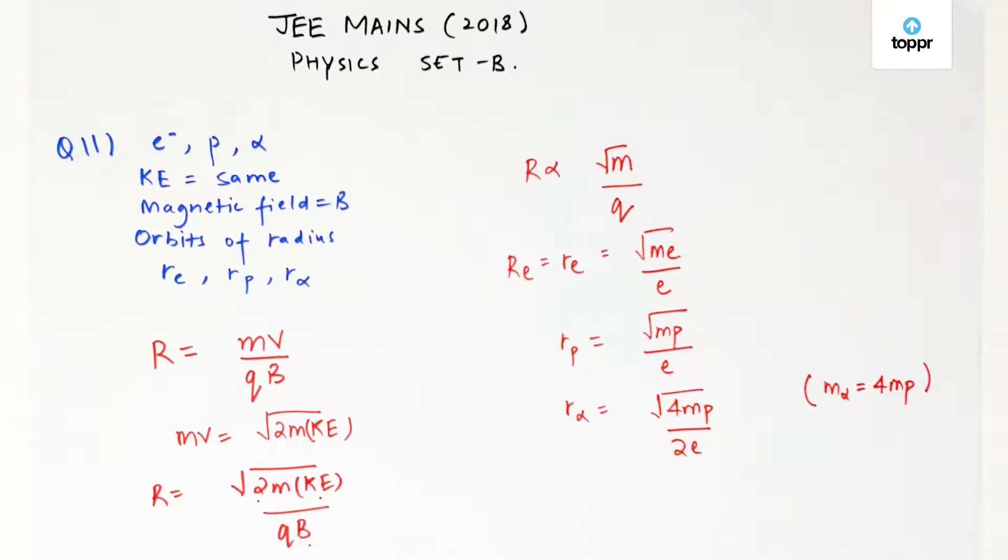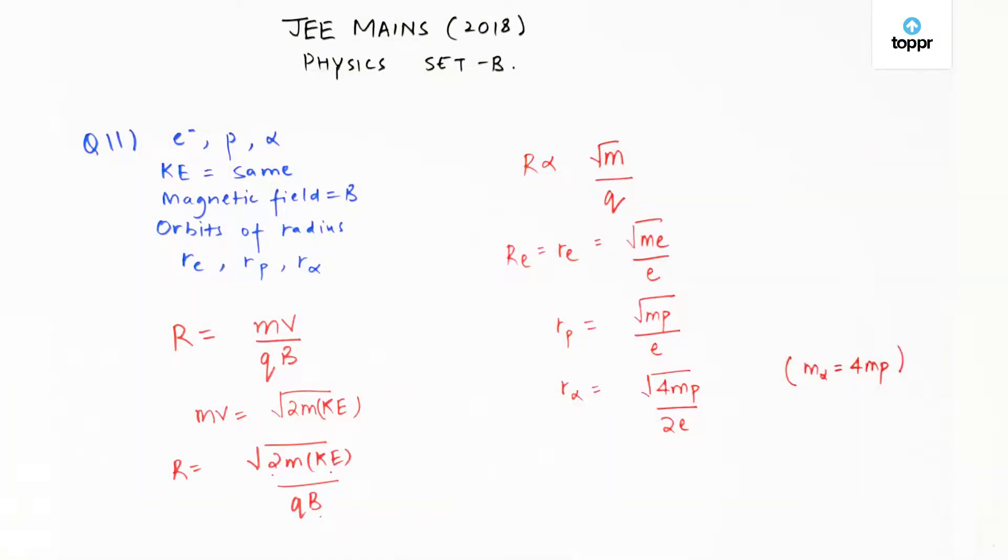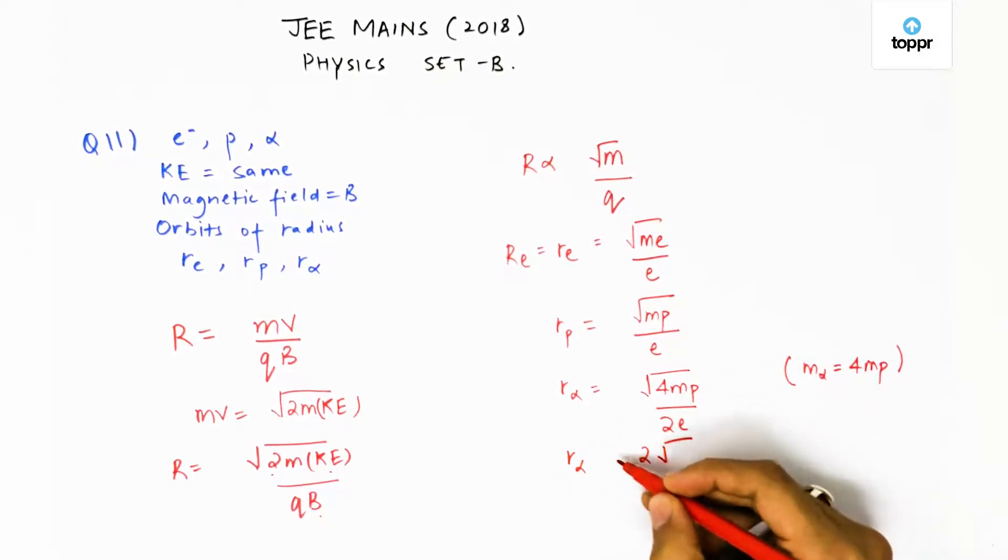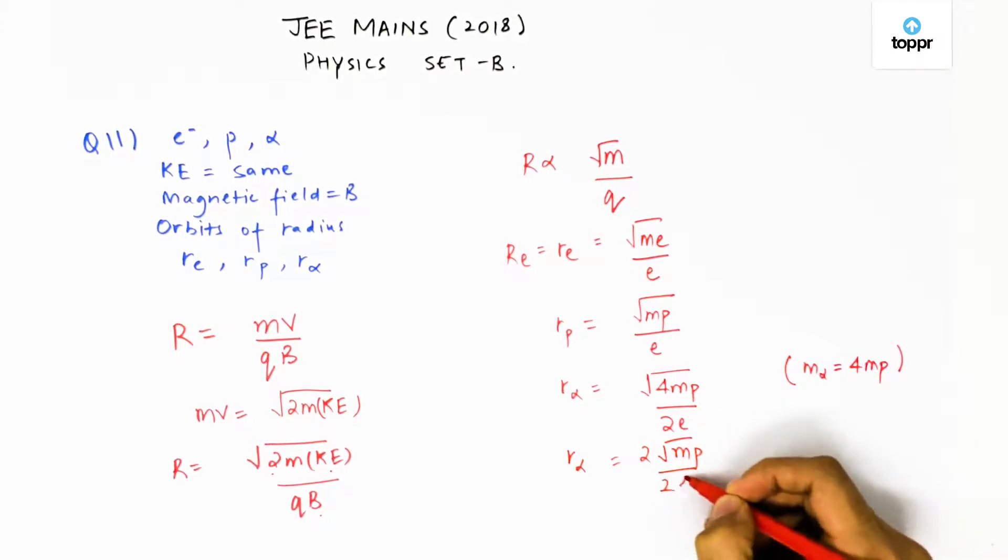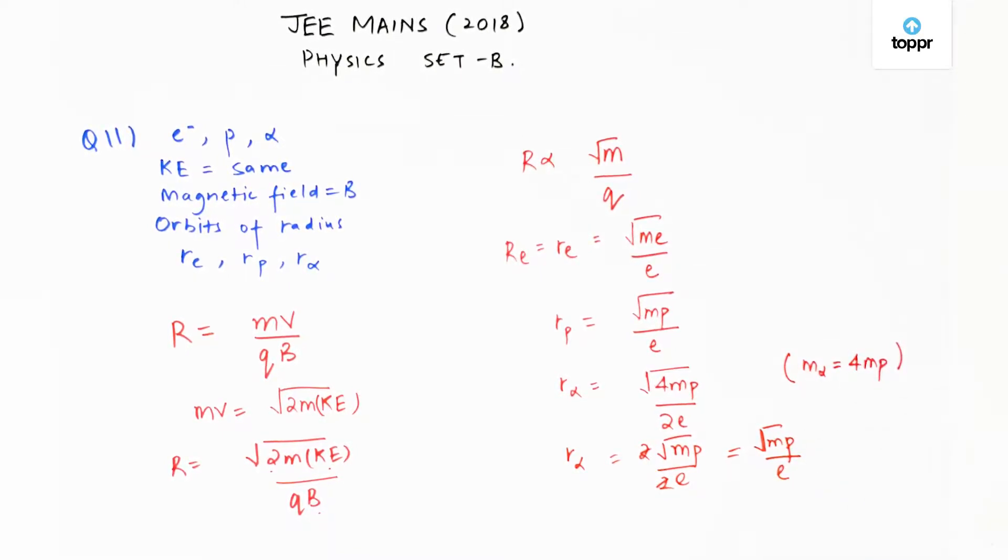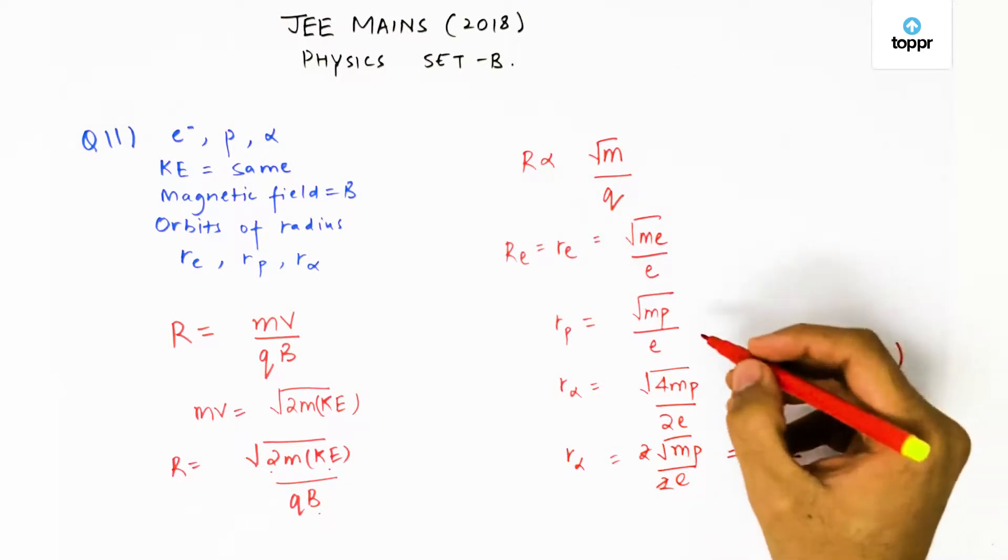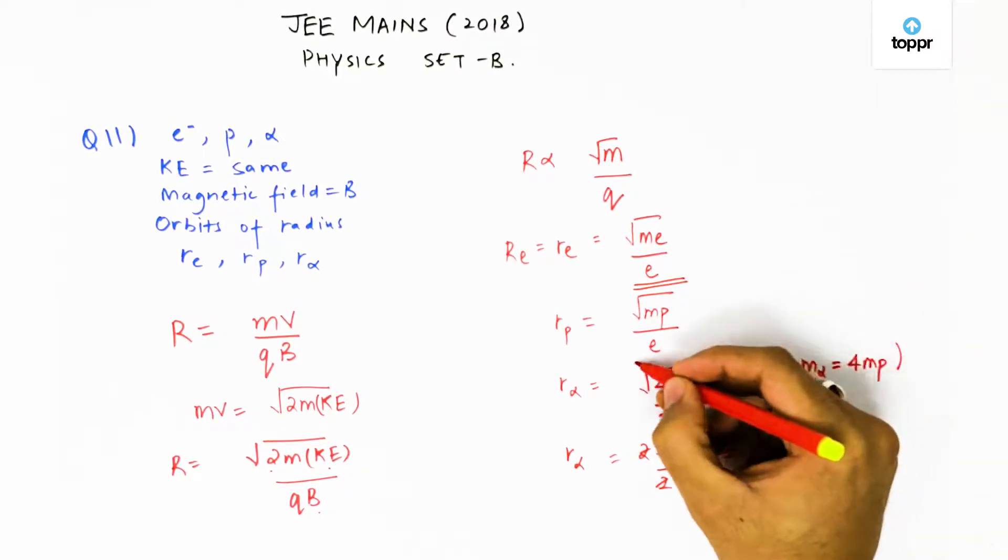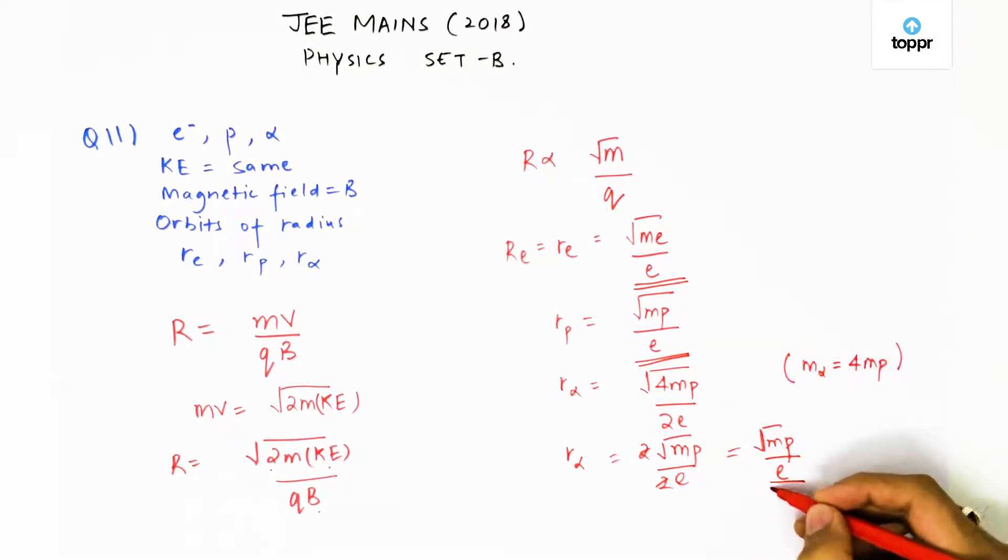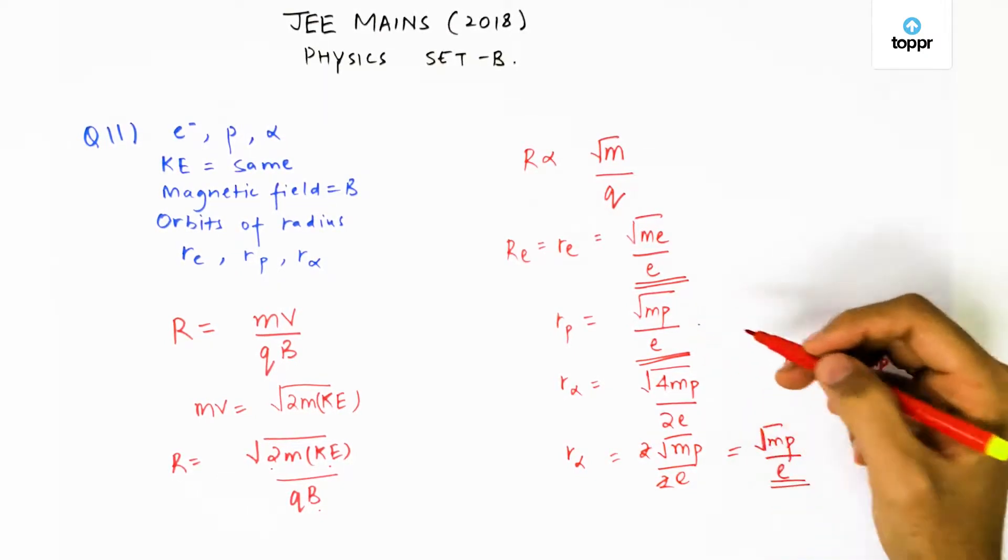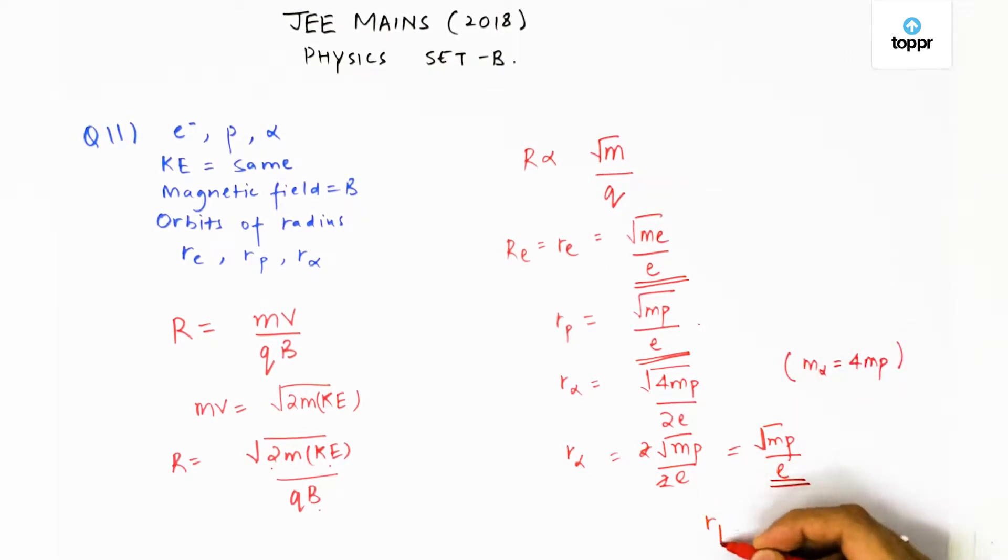We have three things here. What we can conclude here? R alpha becomes root 4 equals 2 mass of a proton divided by 2e, which ultimately gives us mp by e. If this is a radius of an electron and this is a radius of a proton, this is a radius of our alpha particle. First thing that we can see is rp and r alpha are equal.